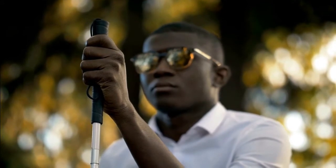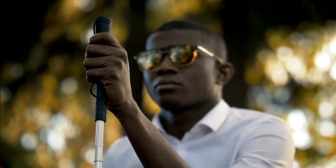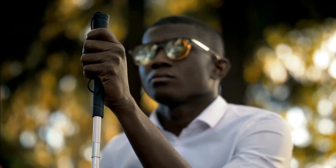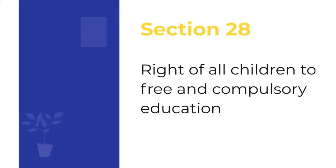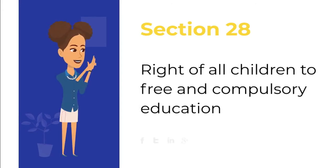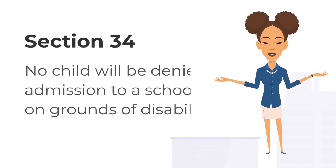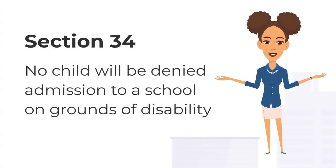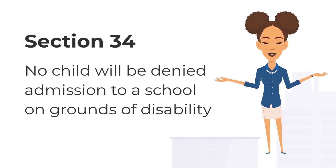On the one hand, the Act protects the right to education for children with disabilities in the following ways. Section 28 provides for the right of all children to free and compulsory education. Section 34 ensures that no child will be denied admission to a school on any grounds, including disability.